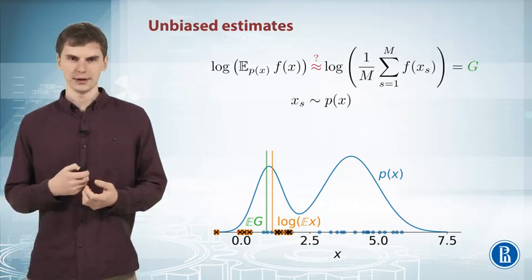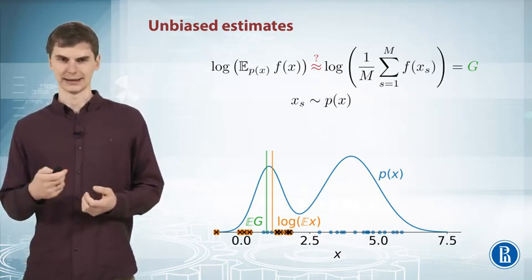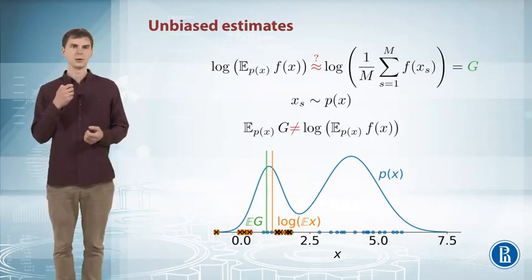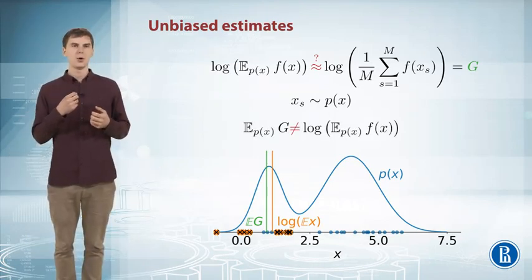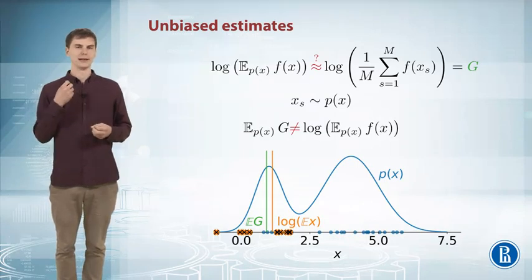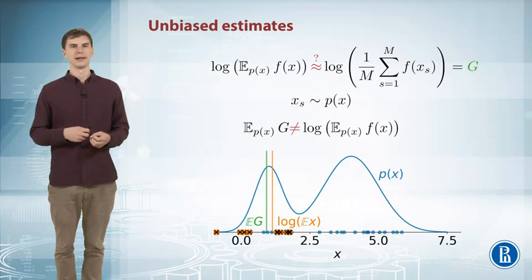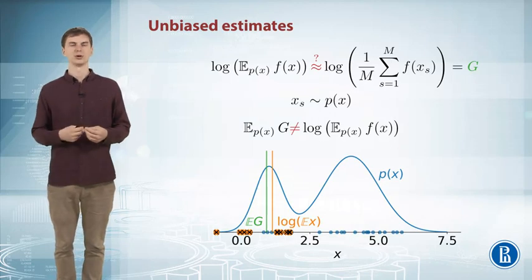But it turns out that it's not an unbiased estimate. So if you look at the samples here, all the samples of the random variable g will lay to the left of the actual expected value. So you're underestimating your true value which you want to approximate, even on average.